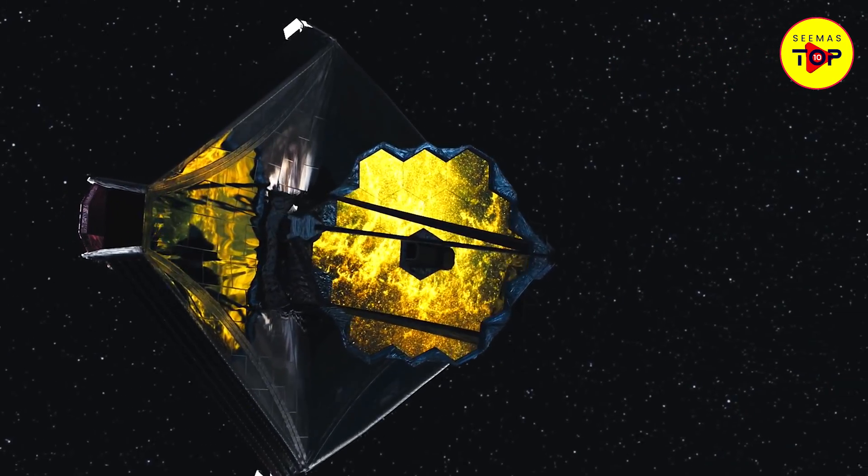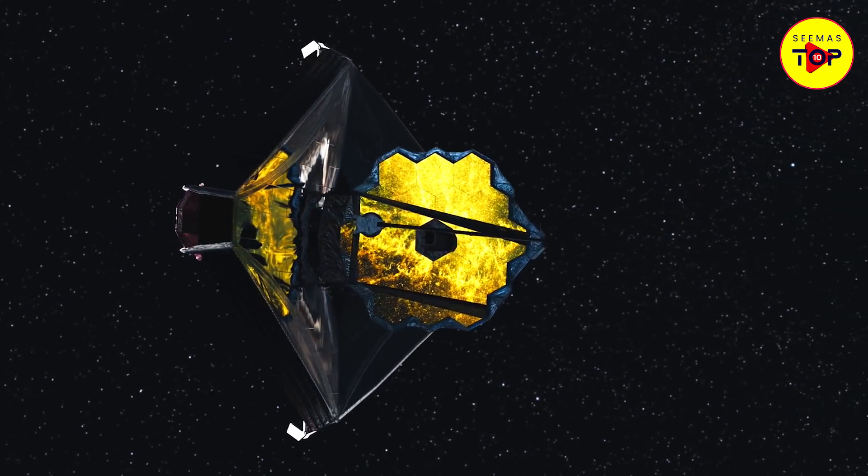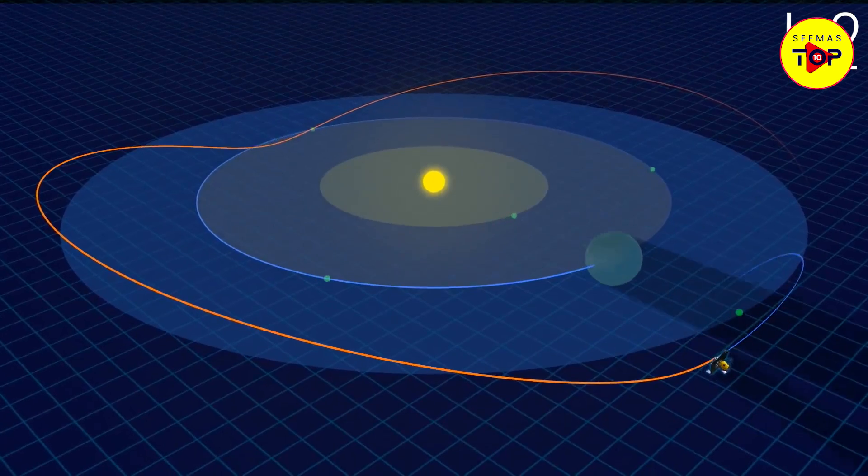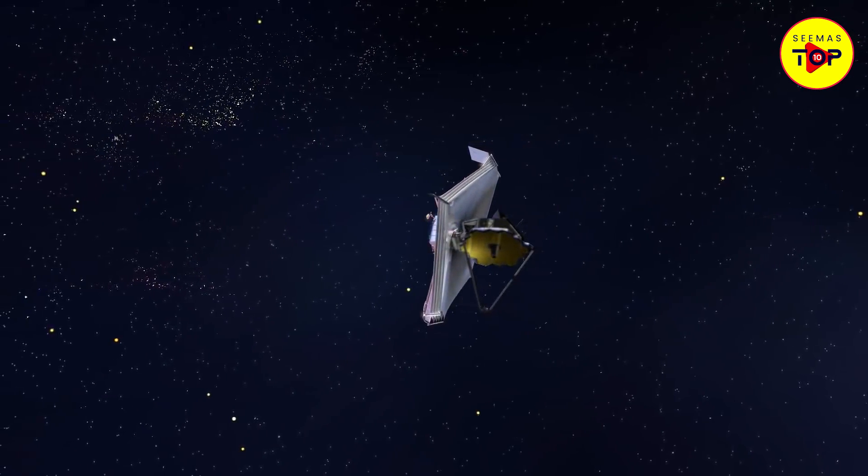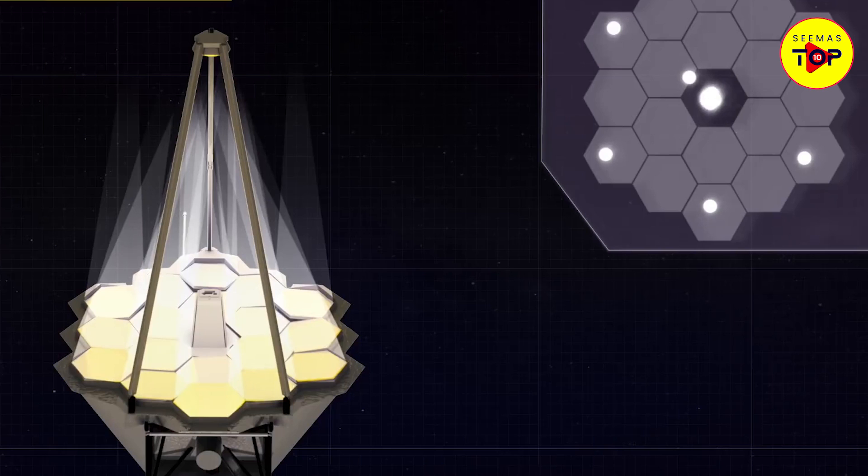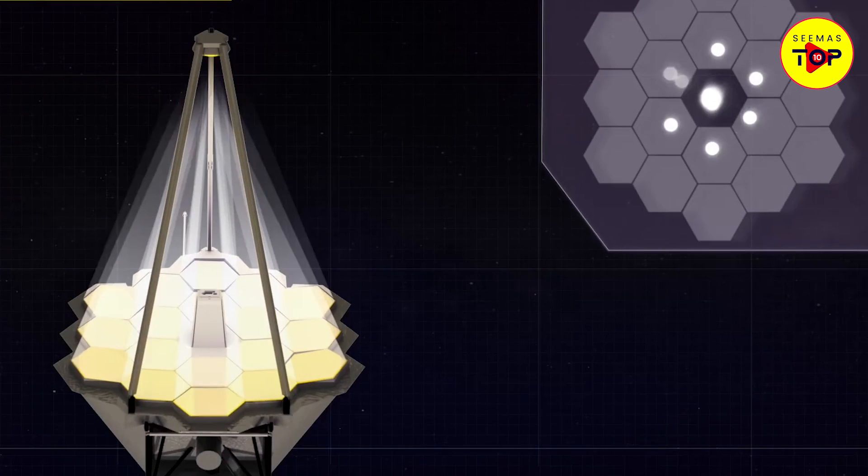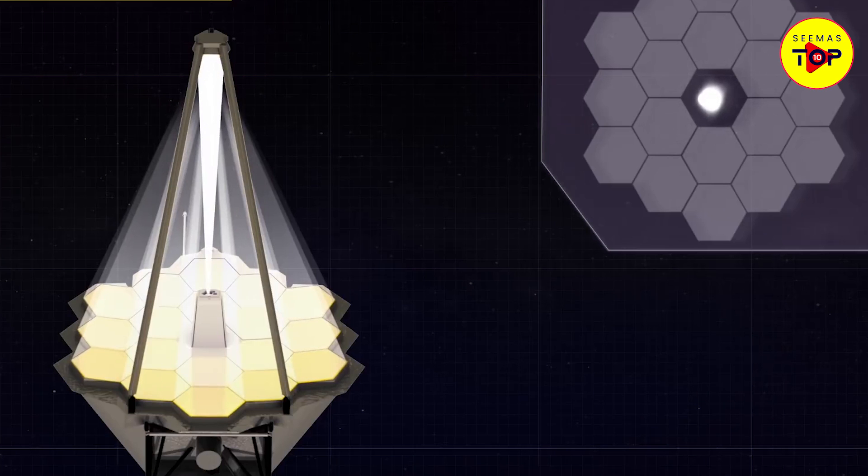The telescope will go through various course corrections and maneuvers during the first month to obtain the final orbit around L2. During the second month, the telescope will undergo an intense process of mirror segment alignment. It is estimated that this will take between one and three months after launch for the primary mirror segments to align together.